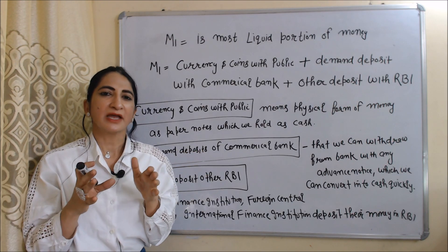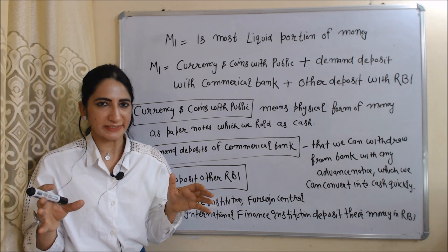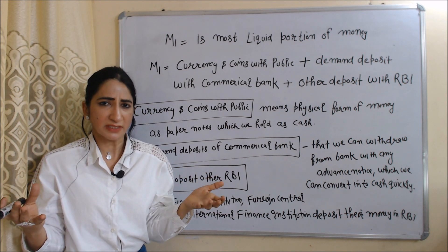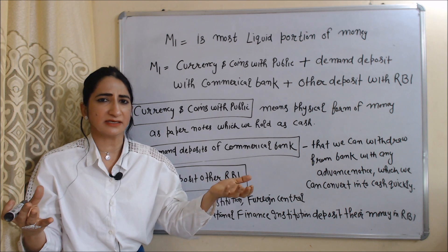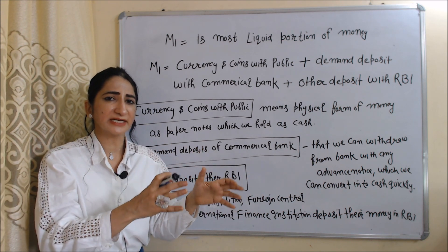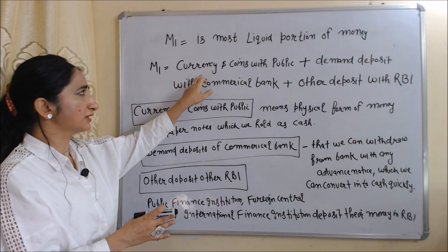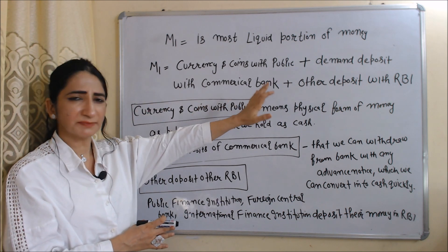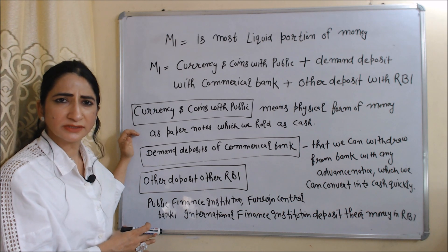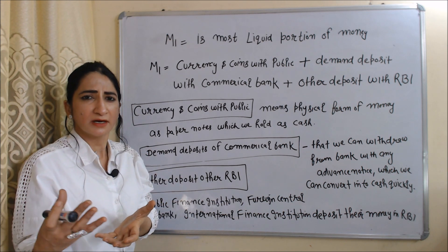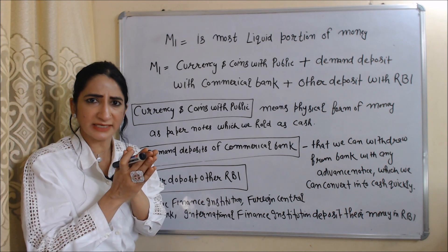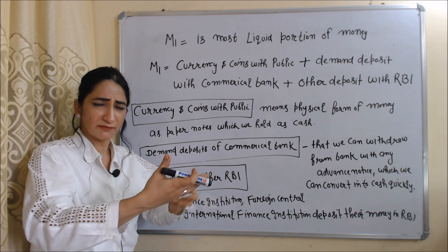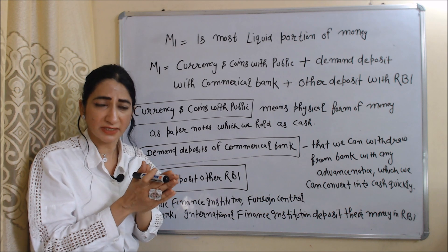M1 is the most liquid portion of money. Liquid portion means M1 contains cash or any asset which we can convert into cash very quickly. M1 equals currency and coins with public, plus demand deposit with commercial banks, plus other deposits with RBI. Currency and coins with public means a physical form of money, for example paper notes which we hold as cash. Demand deposit with commercial bank means any deposit which we can withdraw without giving any advance notice.